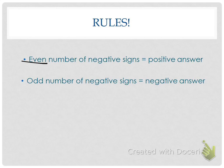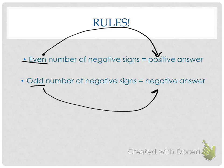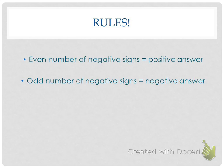Our multiplying and dividing rules say that if we have an even number of negatives in the expression, it's a positive answer. If we have an odd number of negatives in the expression, it's a negative answer. So we multiply and divide like normal, and then we're looking for how many negatives are in the expression. You've got to keep these sets of rules separate depending on the operation.